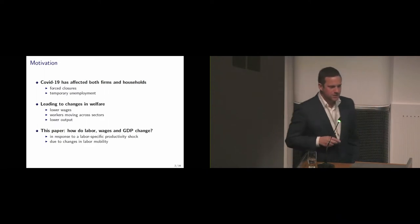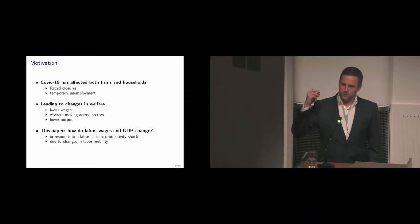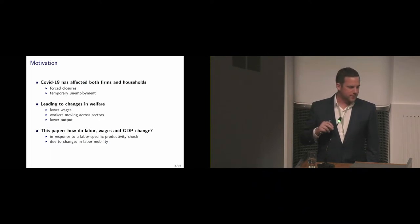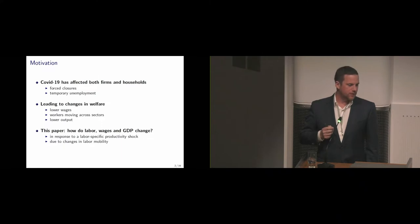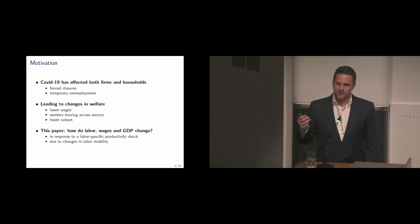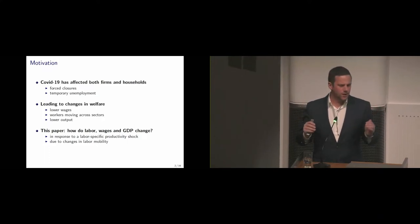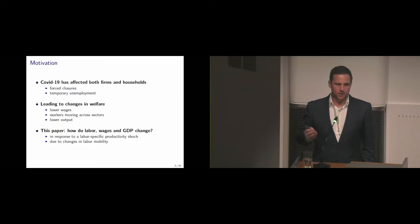In this paper we ask: what's going to happen to labor quantities, wages, and real output in response to two things? We're going to look at two exercises. One is, what happens if there's a labor-specific productivity shock in one sector? How is it going to affect wages in that particular sector, but also in all other sectors due to the input-output structure of the network? The second exercise is: people are imperfectly mobile across sectors — there are labor frictions in our model. What happens if we reduce labor frictions, for instance due to education or labor market policies?